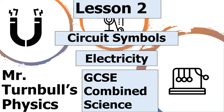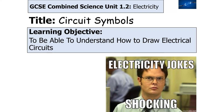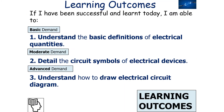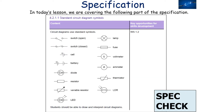Hello and welcome to today's lesson on circuit symbols, which is part of the GCSE combined science topic electricity. In today's lesson we're going to understand how to draw electrical circuit symbols. If we've been successful, we should be able to understand the basic definitions of electrical quantities, detail the circuit symbols of electrical devices, and understand how to draw electrical circuit diagrams — which falls under standard circuit symbols in the electricity topic of the physics section.